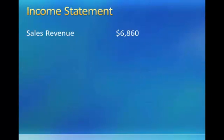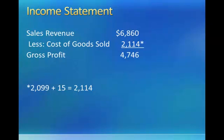The next thing we want to look at is our income statement. If you recall from the second module, we had sales revenue of $6,860. We also had cost of goods sold of $2,099, but we just added an additional $15 to cost of goods sold from our shrinkage, bringing our cost of goods sold up to $2,114. That gives us, with sales revenue minus cost of goods sold, gross profit of $4,746.